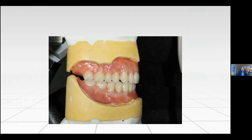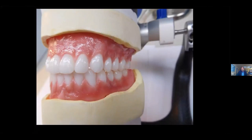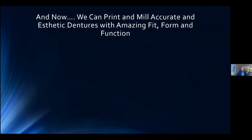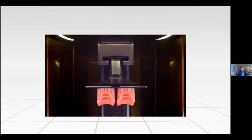We can use different colors to match the patient's gingiva — for example, Vita Pan Plus teeth with different color waxes. Why can't we do a characterized wax-up for the patient, like we do a diagnostic wax-up for crown and bridge, to show them what the final denture will look like? We can do that on the analog side. Now we can also print and mill accurate, aesthetic dentures with amazing fit, form, and function. About a year and a half ago, I didn't like printed dentures — they were tracking bacteria, brittle, didn't look natural, had that bubblegum color on the gingiva — but we've come a long way.